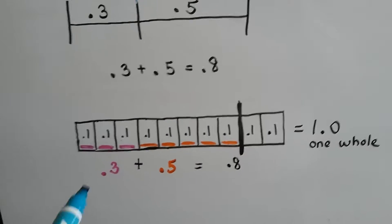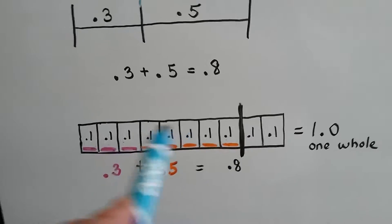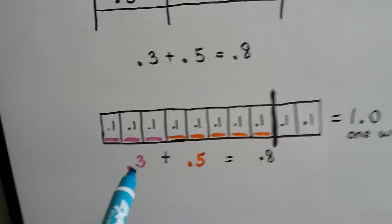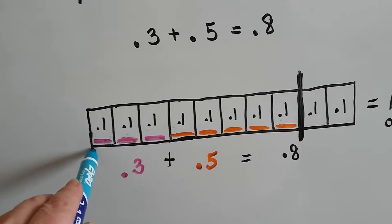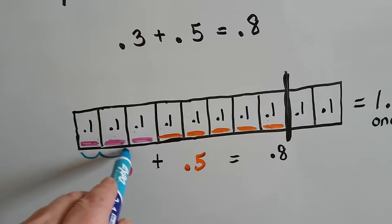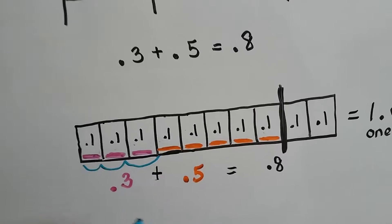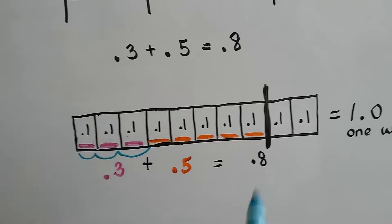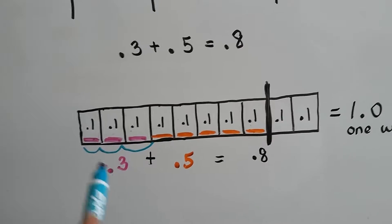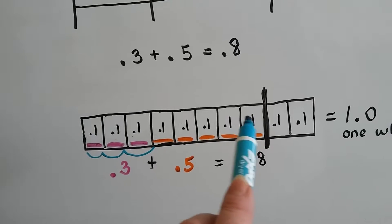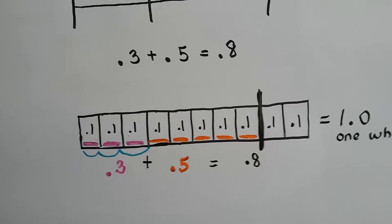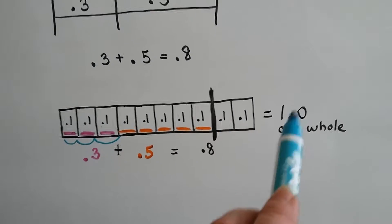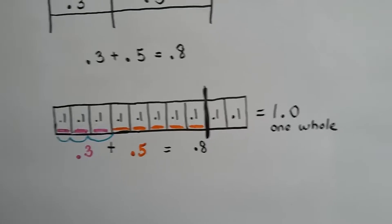If we had one whole — ten tenths — and we had three tenths right here: one, two, three. And then we added five tenths to it, we would have a total of eight tenths. Two more and we'd have a whole one.